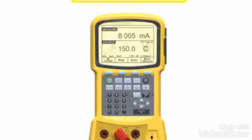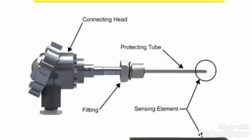Process Calibrators are used by technicians to measure and calibrate sensors and transmitters. Using an RTD, or resistance temperature detector, as an example, the initial step of calibration is verifying the accuracy of the temperature sensing device.